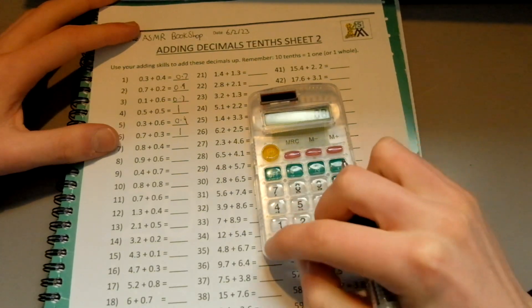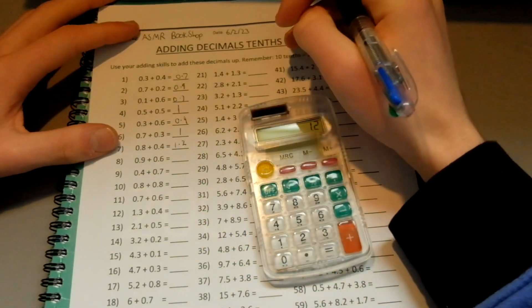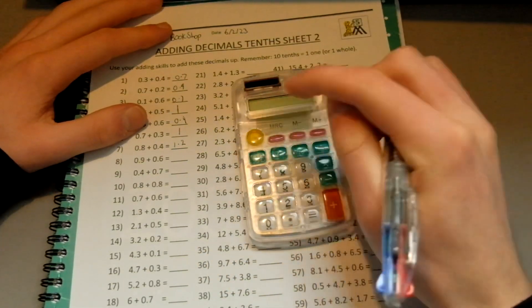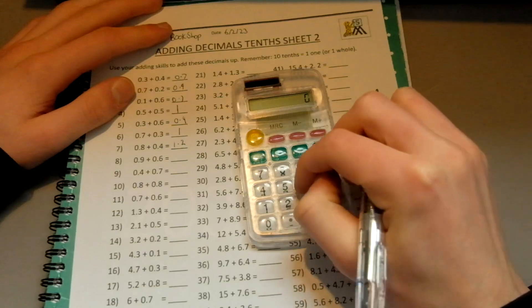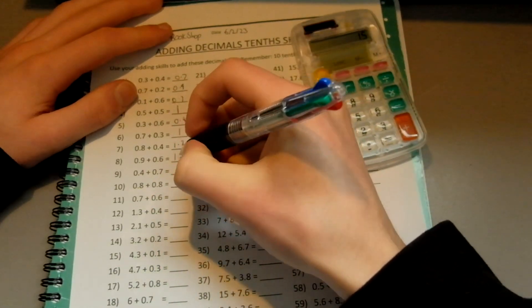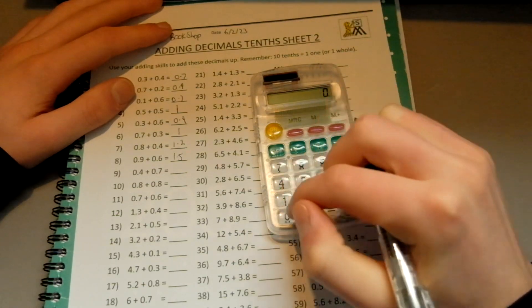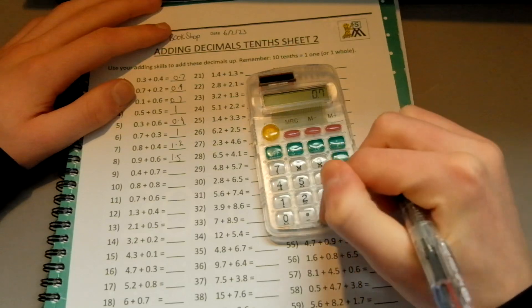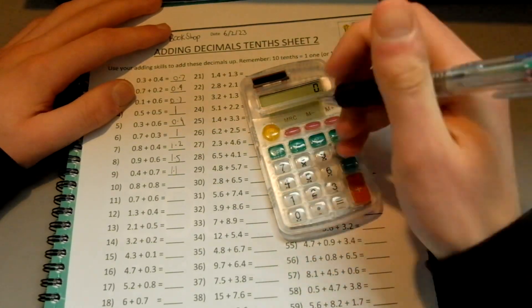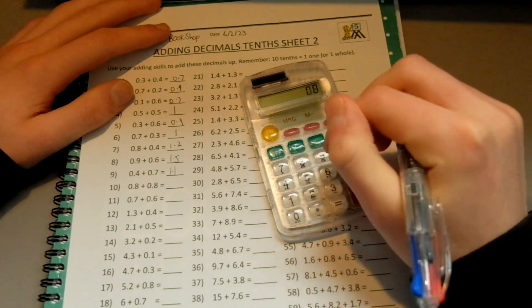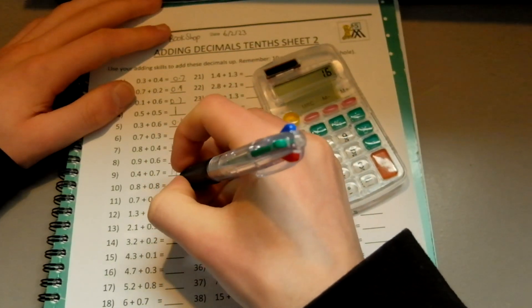0.8 plus 0.4 equals 1.2. We've passed the one mark. 1.2. But yeah, uni's going pretty well. 0.9 plus 0.6, 1.5. Yeah, it's going fairly well. I've got four modules that are my main modules, and I'm in pretty much every day each week. 0.4 plus 0.7. And it is pretty difficult. I'm not going to lie. The maths is really, really hard, and there's just so much to learn and understand. And I'm not hopeful for my tests coming up at the end of the semester, because this year's modules are a lot harder for some reason.